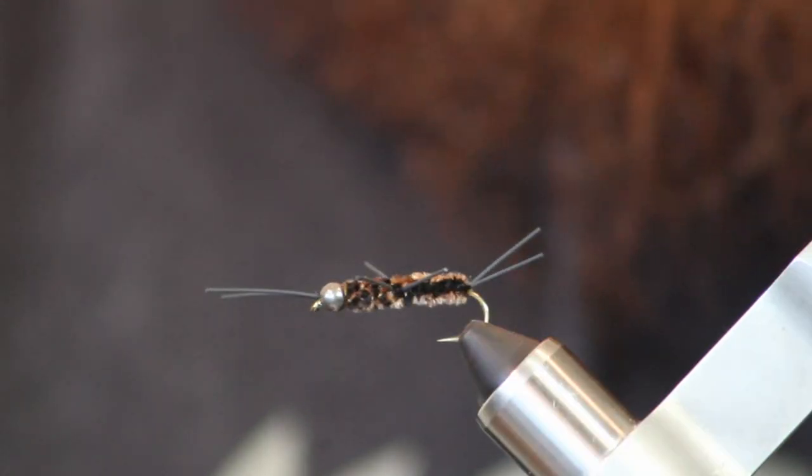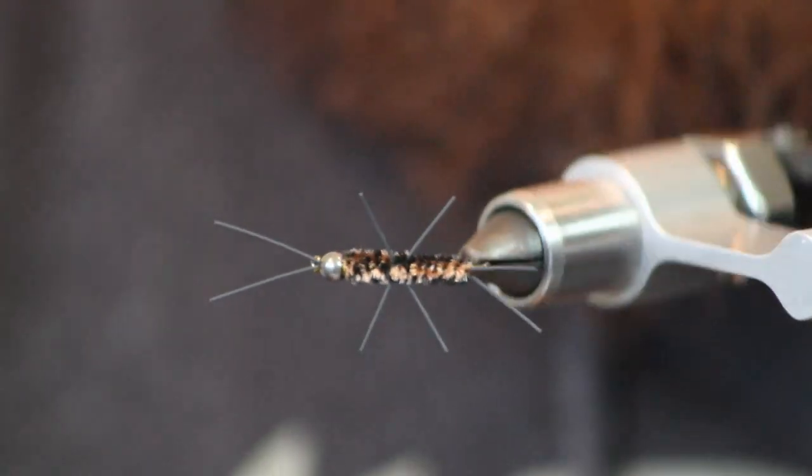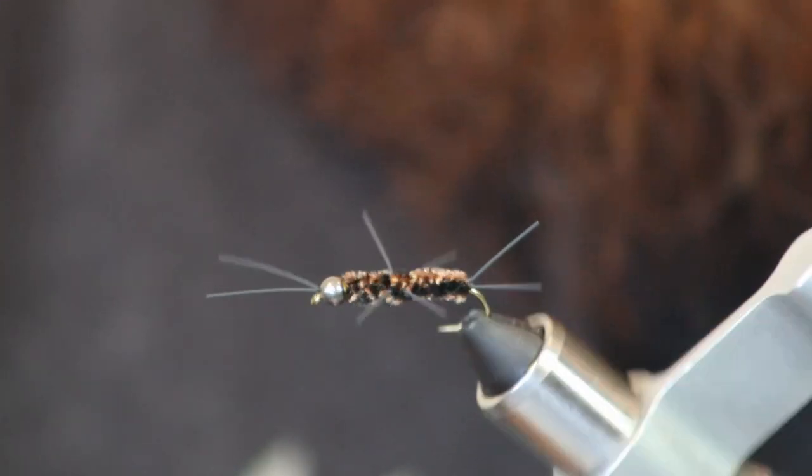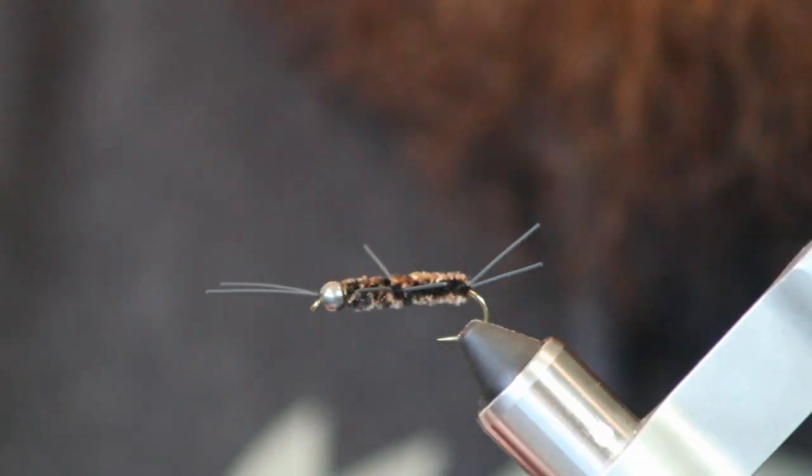Hello, this is Johnny Garrison with Hellbender Fly Fishing and today we're going to tie a Pat's rubber leg. You hear these called like a girdle bug sometimes. It's just a stonefly pattern with rubber legs. Pretty simple, pretty easy. We use them a lot here in the mountains.